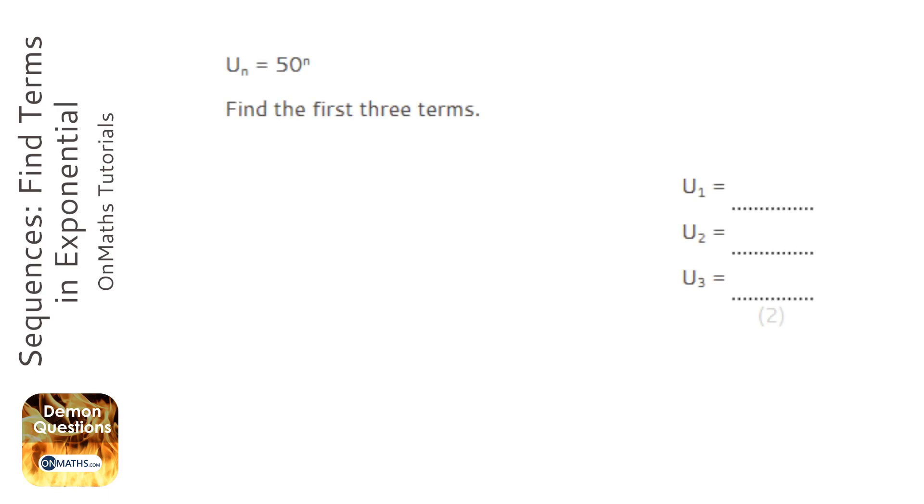OK, so we're given the nth term is 50 to the power of n. So for the first term, n will be 1, so 50 to the power of 1 is just going to be 50.